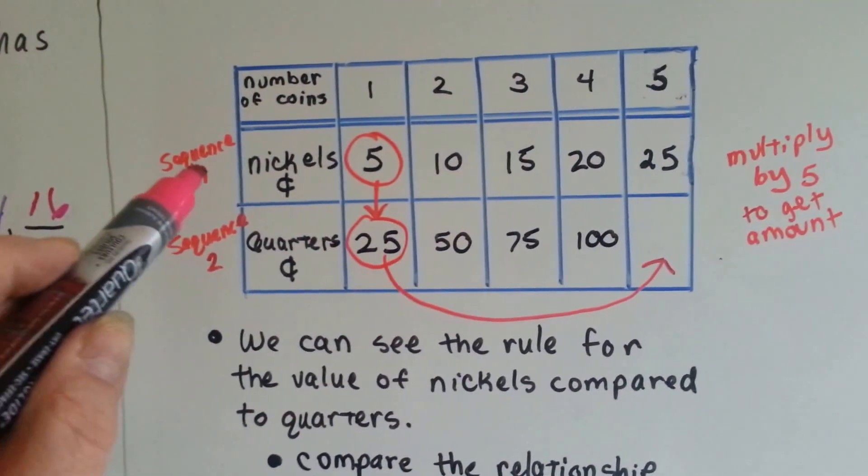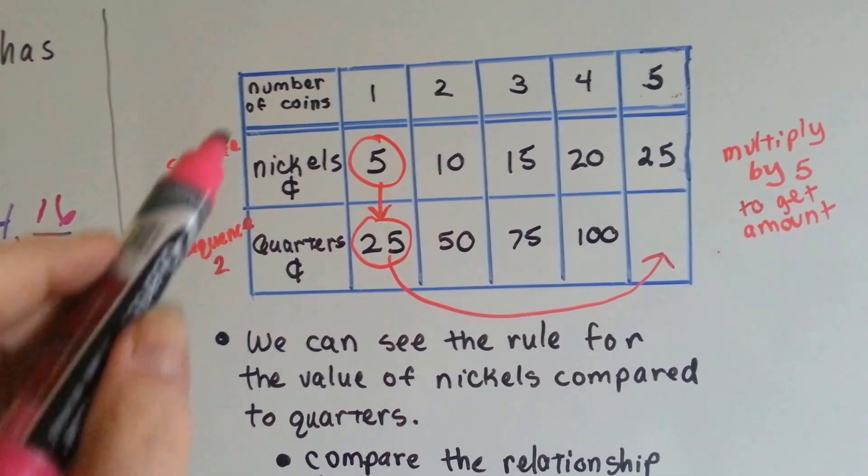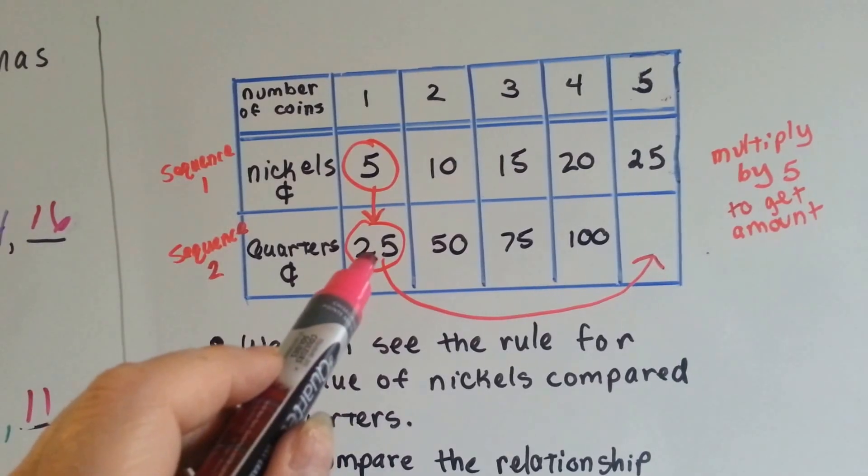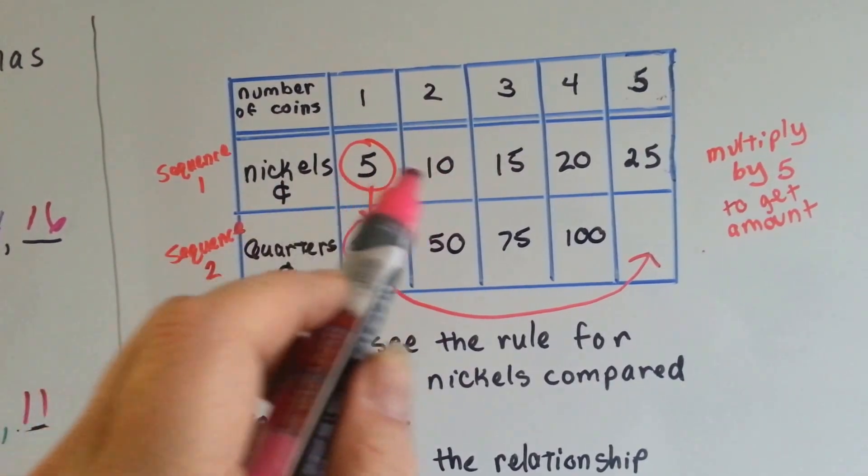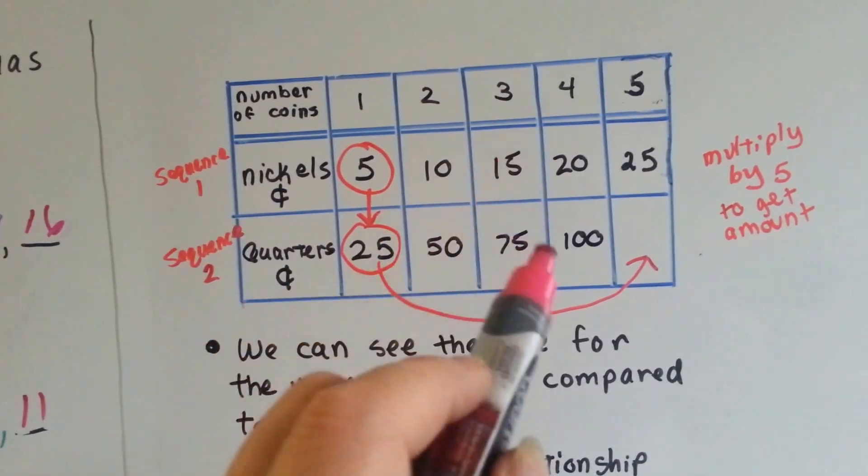In this chart, here's the first sequence, it's nickels. The second sequence is quarters. This is the number of coins. If there's 1 coin, a nickel is 5 cents, and a quarter is 25 cents. This is how many cents they are. 2 coins, a nickel is 10 cents, quarters are 50 cents. So do you see what's happening in this sequence?